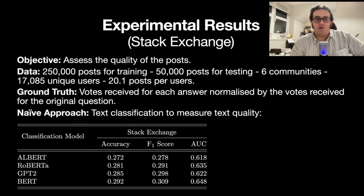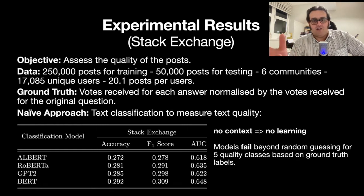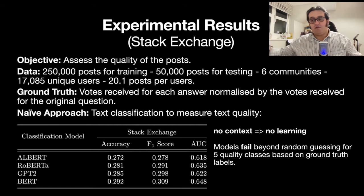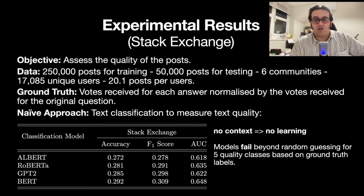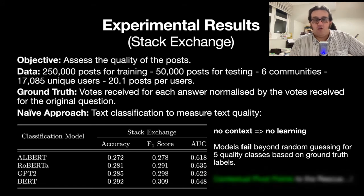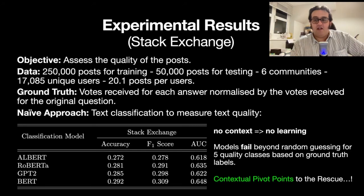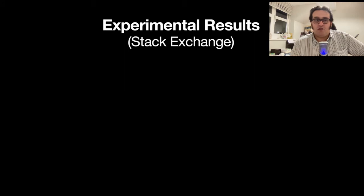We use state-of-the-art classification methods — powerful transformers — and as you can see in the results, they essentially fail because there is no context in this scenario. The models are just randomly guessing. It's also very difficult even for a human: if you have three answers to three questions without knowing the context, one might be about a technical question and another about a philosophical question — reading these answers, it will be very difficult to judge. A machine learning model will similarly fail. So what we propose is a contextual pivot point: a backdrop of context that holds different answers together to provide a stronger learning environment for the model.